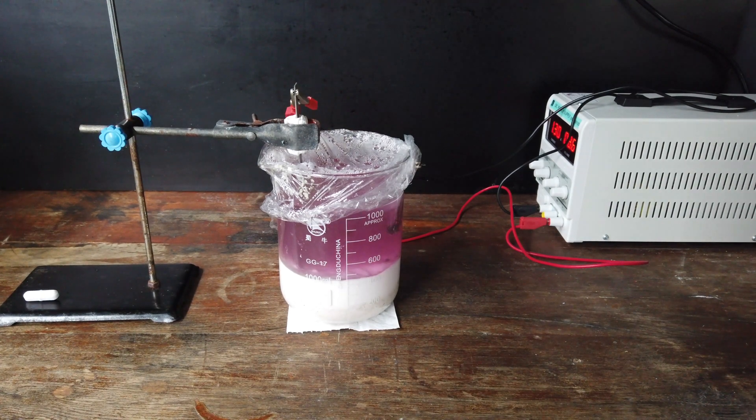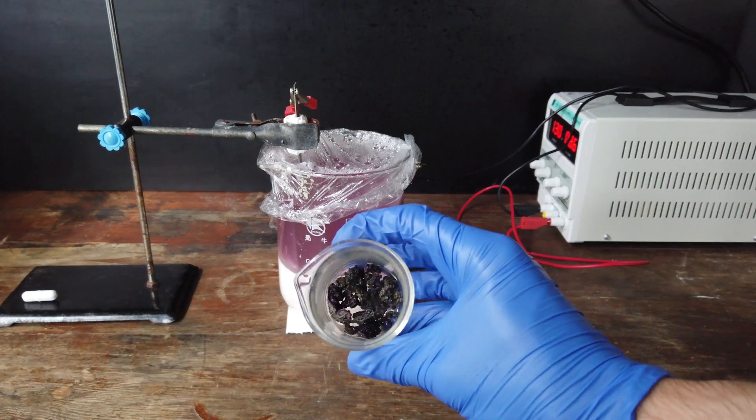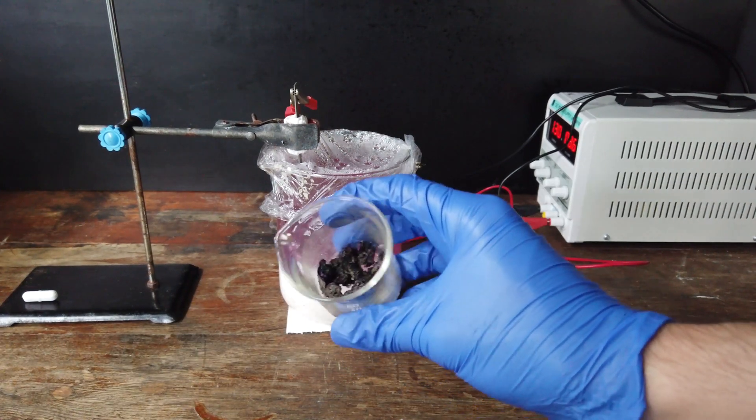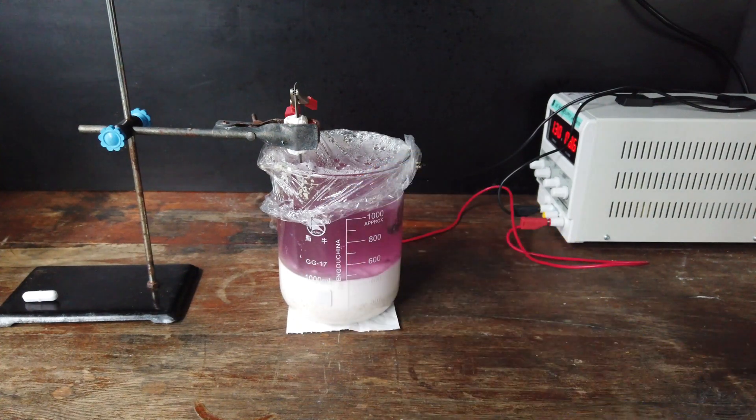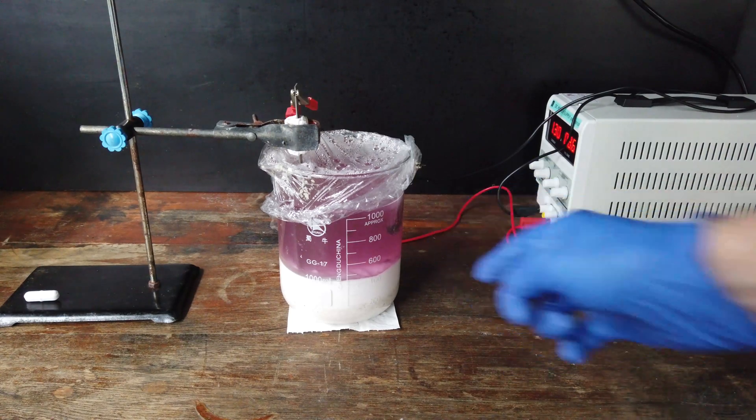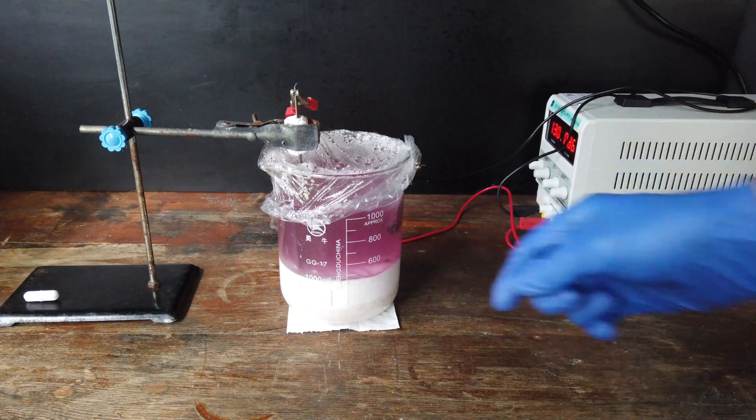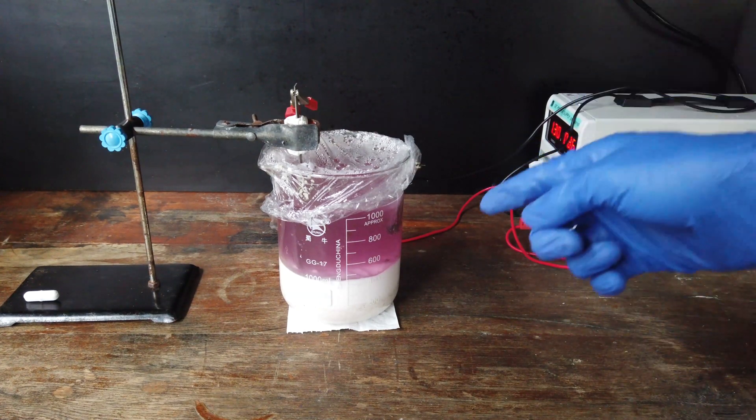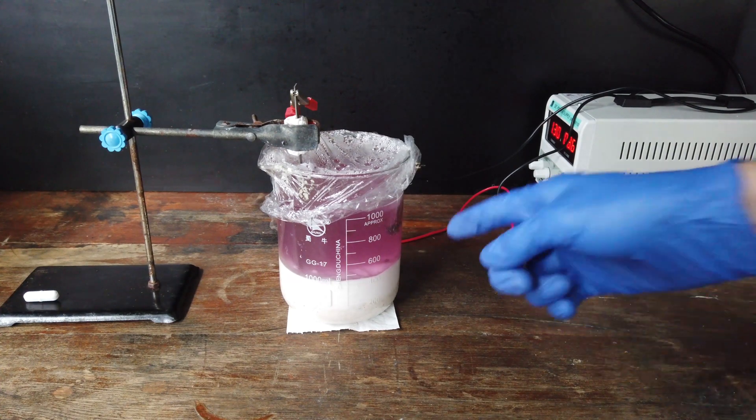Two weeks on from starting our electrolysis, you can see we have made a reasonable quantity of our cobalt and nickel mixture. This is everything I've harvested off the cathode from our cell, and we've had it running at about one and a half amps this whole time. As I said earlier in the video, I've been periodically stirring up the mixture.